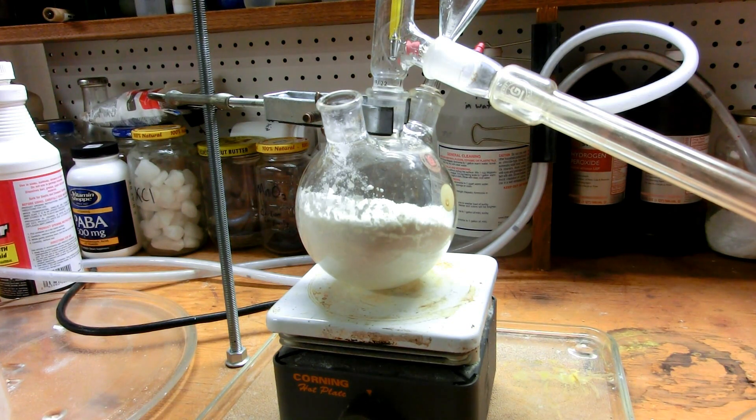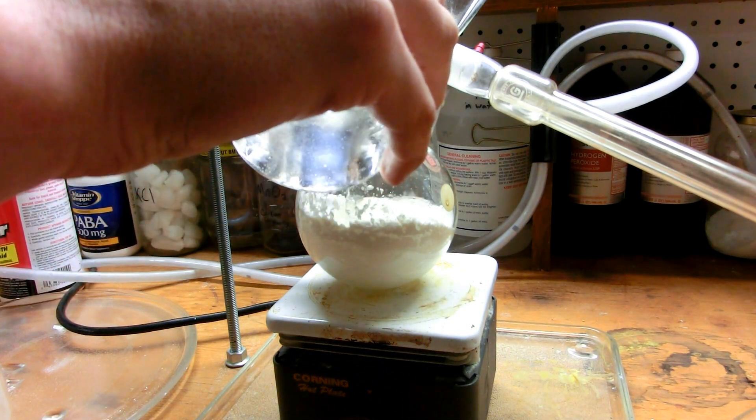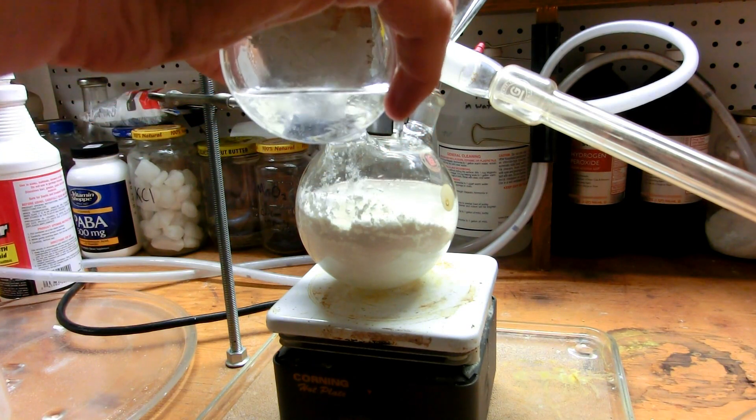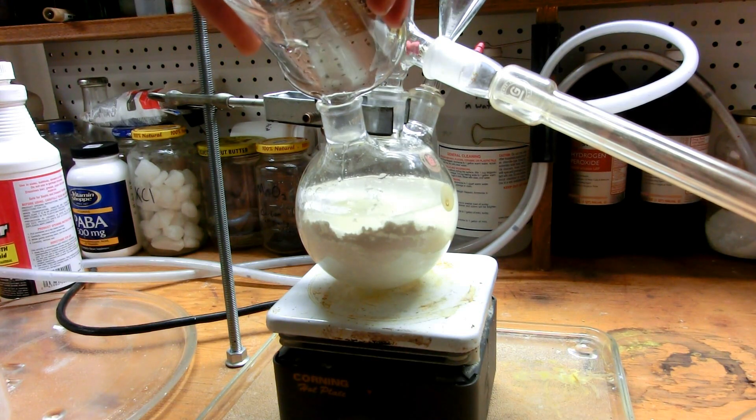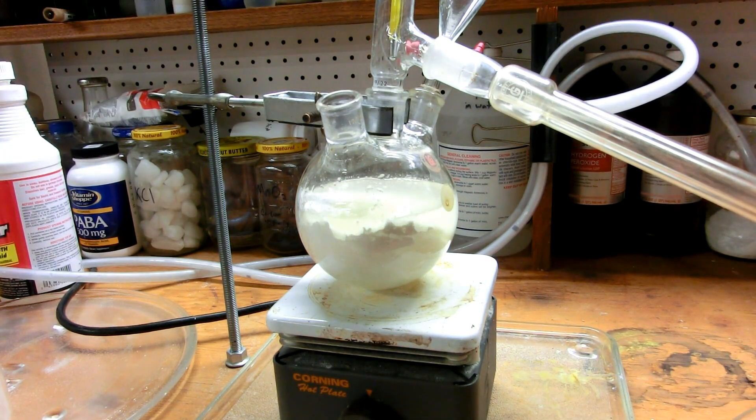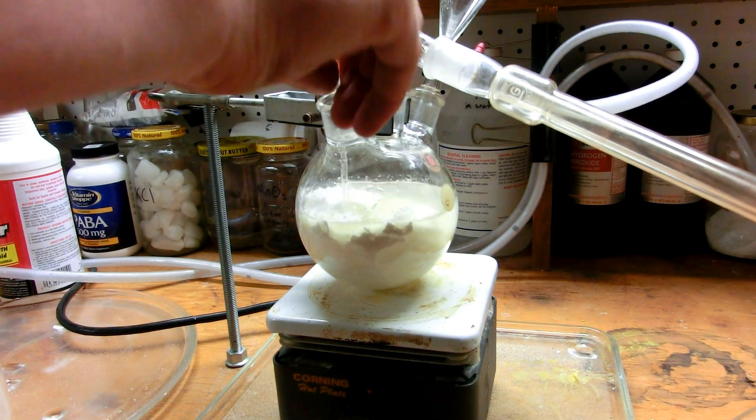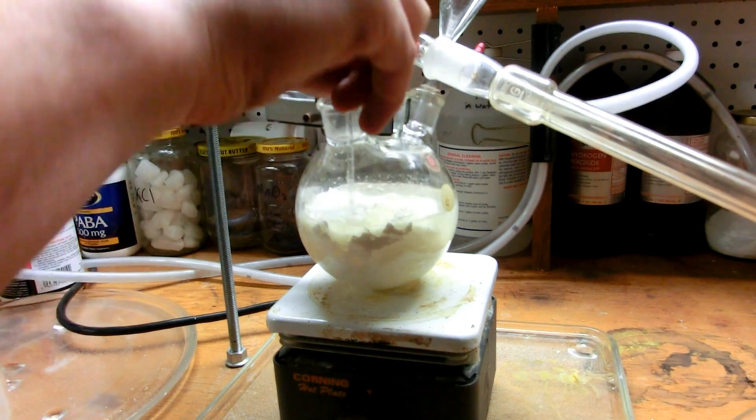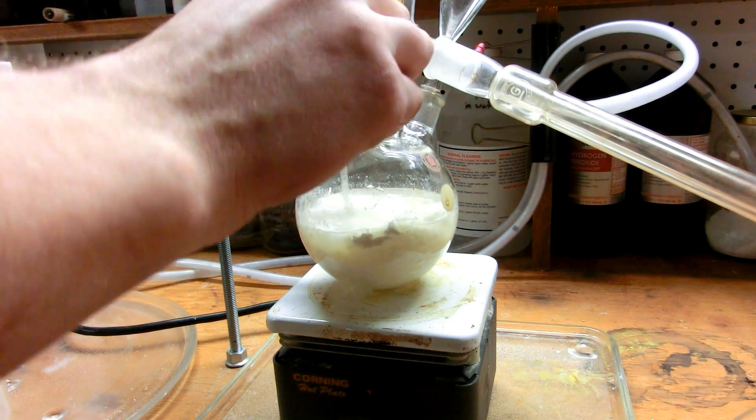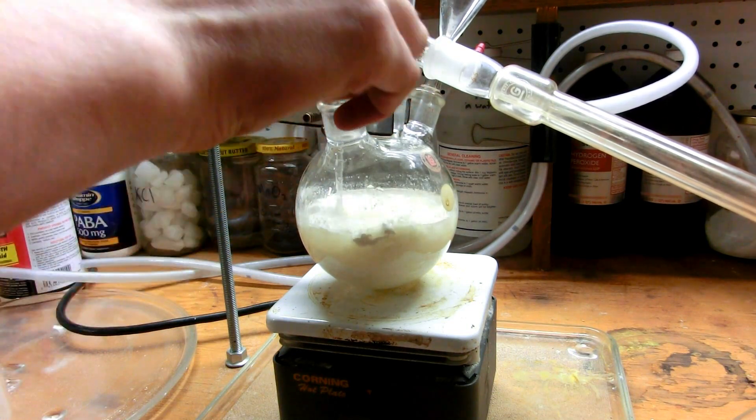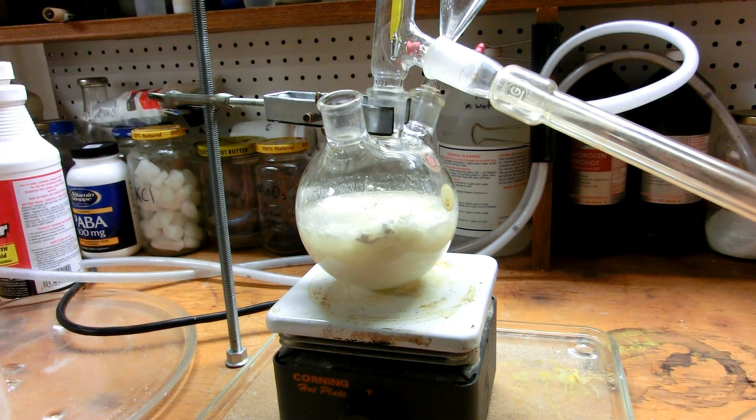First, we're going to add the calcium ammonium nitrate as this solid. There we go. That's all the calcium ammonium nitrate. Then we're going to push that down a little bit with a stirring rod so we don't have an issue with clogging up and bumping. Second, we are going to add the water. This is a very specific order. You always add acid to water, not the other way around.